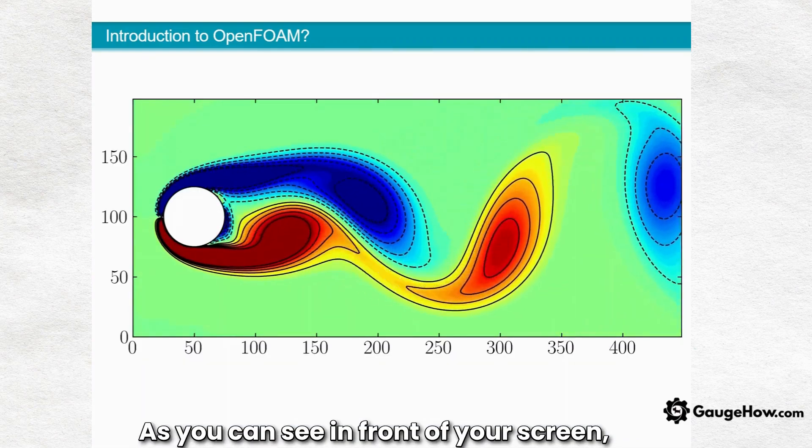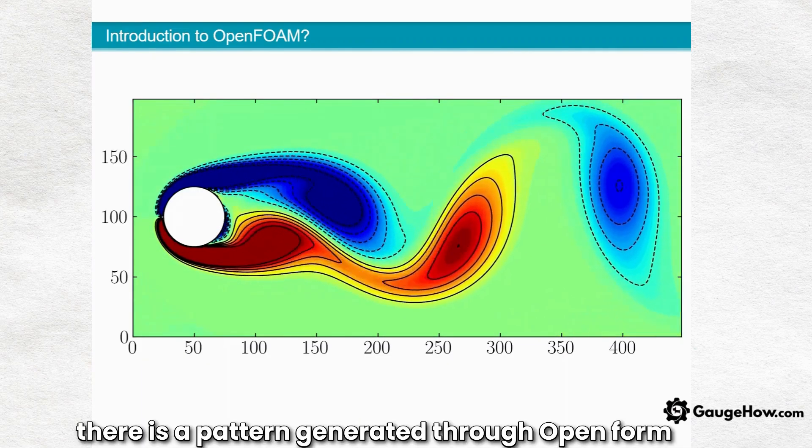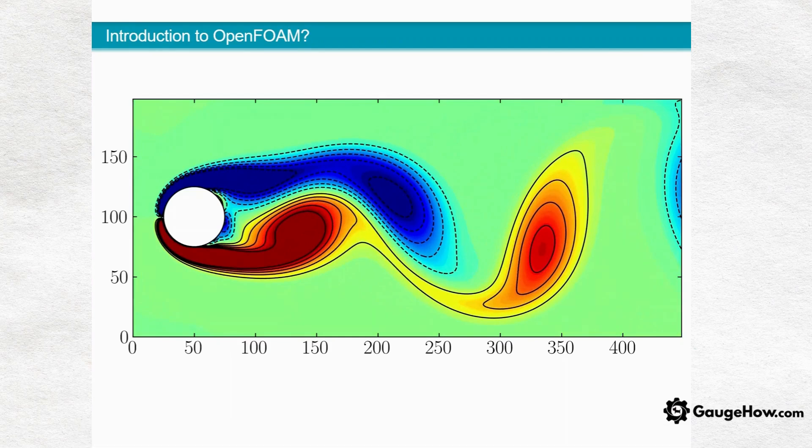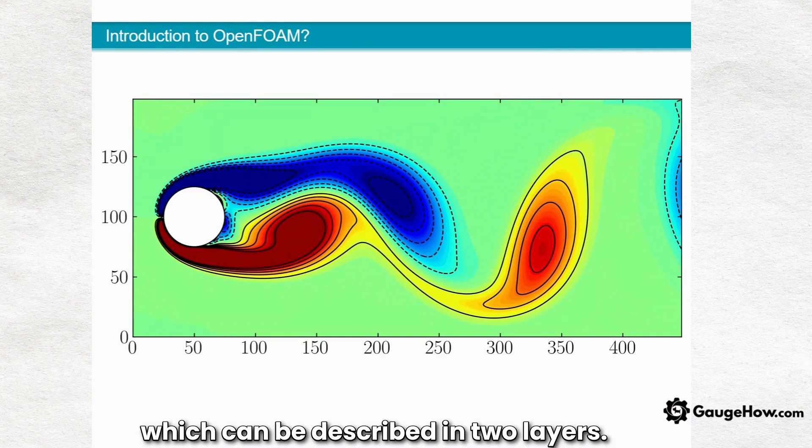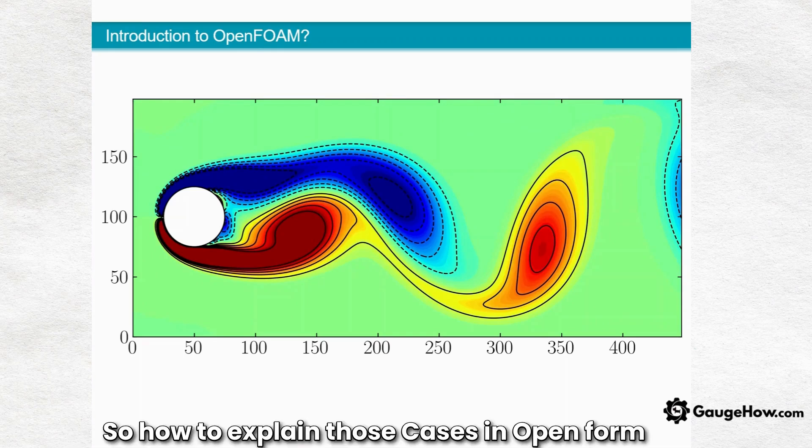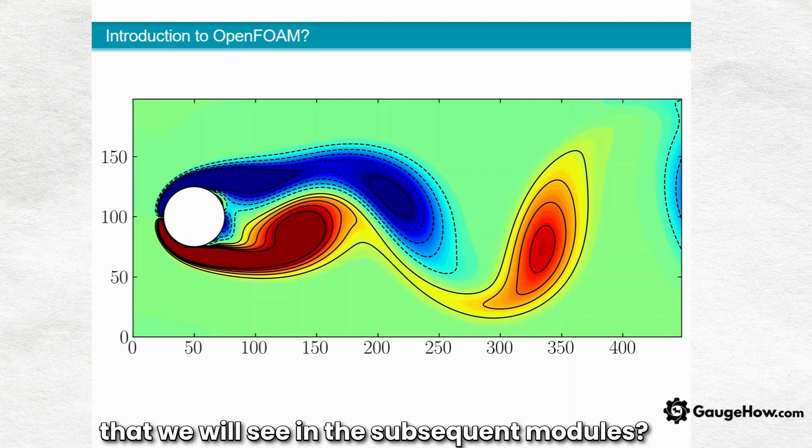As you can see in front of your screen, there is a pattern generated through OpenFOAM which can be described in two layers. The first layer has a blue phenomena and the second one has a red phenomena. How to explain those cases in OpenFOAM, we will see in subsequent modules.